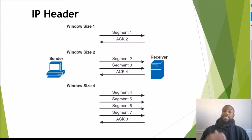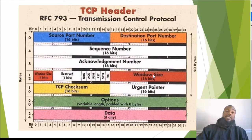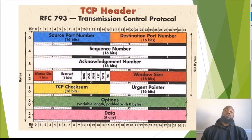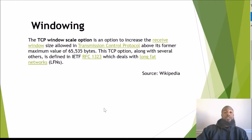These different window sizes — the pace the sender needs to go at — are stored in the window size field of the TCP header. There are tools available to find out the perfect rate to be sending at, though that's beyond the scope of this exam.